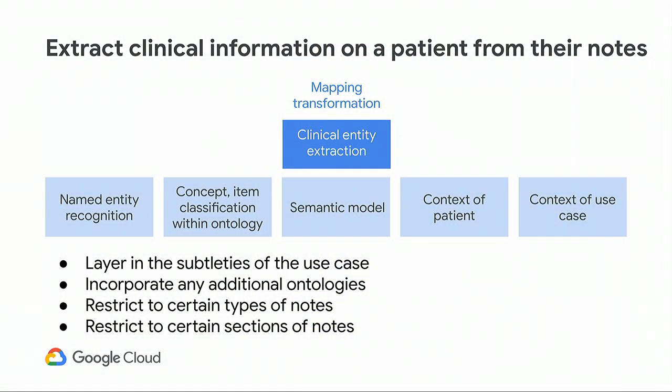Number four is the context of the patient. One note doesn't give you all the history, and sometimes you need more information from the rest of the note to understand what to extract. In medical coding, you want all notes associated with a patient from a particular encounter — but not all note types. You need to really understand the context of the use case, the guidelines, and build a flow appropriate for that.